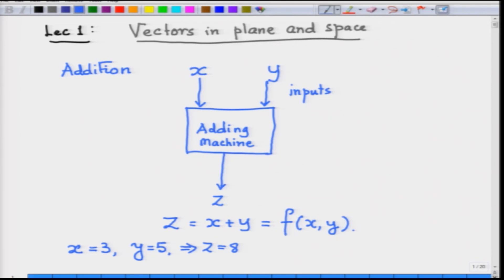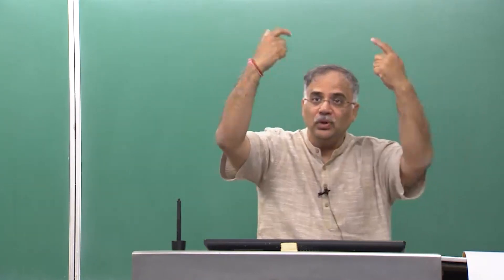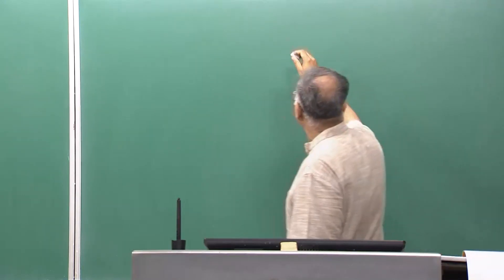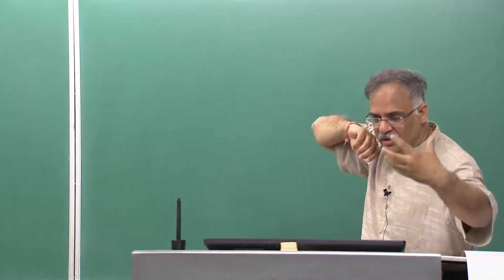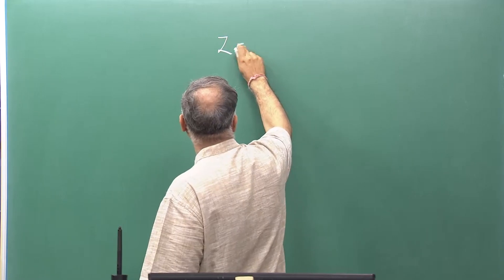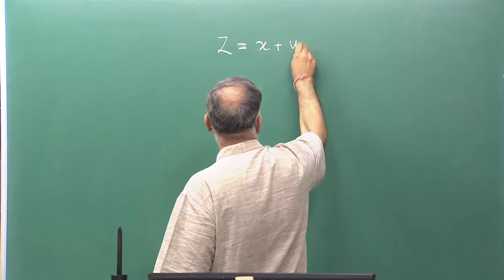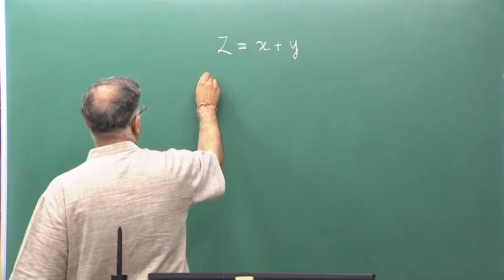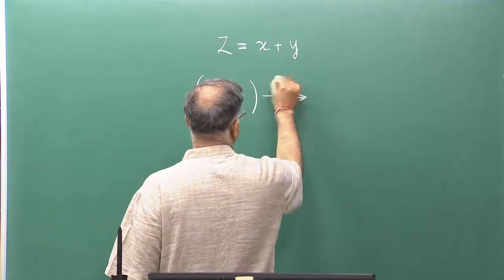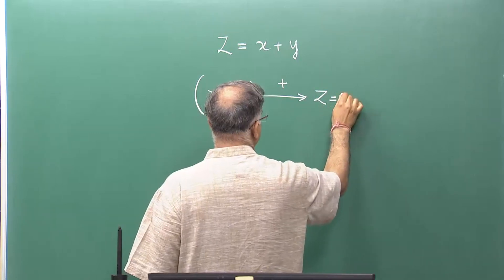The notion of vectors is intimately linked with functions of more than one variable. When you were adding in school, you had essentially started learning functions of two variables without realizing it. When writing a function of the form Z equals X plus Y, you have two input variables — you give me X and Y as input, some operation is applied, and out comes the output Z. So the input variable is not one real number but two real numbers.